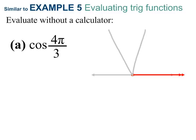I will cut the bottom half of the pizza into three pieces as well. Then I'll count off 4π over 3 in the positive direction: 1π over 3, 2π over 3, 3π over 3, 4π over 3.